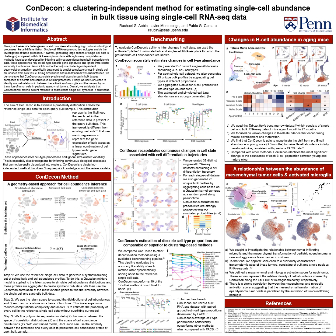Next, we move to a simulation that recapitulates continuous biological processes. For that, we generated 39 different single cell RNA-seq data sets containing a cell differentiation trajectory. Each trajectory consists of a precursor state or two or three terminal states. In Figure C, we visually demonstrate CondiCon's ability to recapitulate continuous changes in cell state associated with differentiation trajectories. Overall, we find that CondiCon's estimation of cell probabilities are strongly correlated with the simulated probabilities.